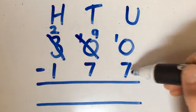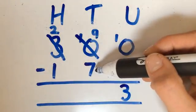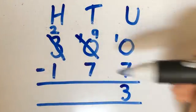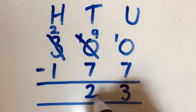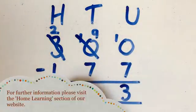So now we've got a 10, take away a 7, which is 3. 9 lots of 10 take away 7 lots of 10. 90 take away 70, which gives us 2 lots of 10, or 20. And 200 take away 100, which is 100.